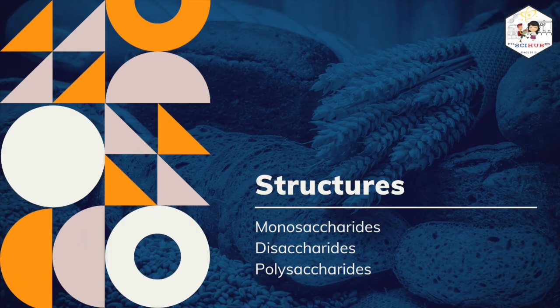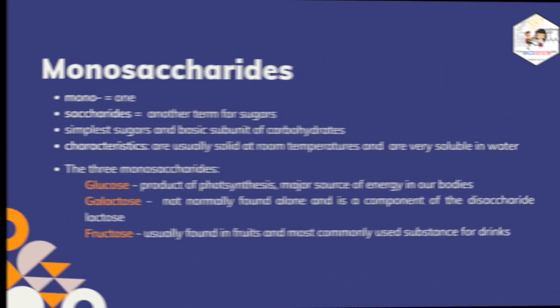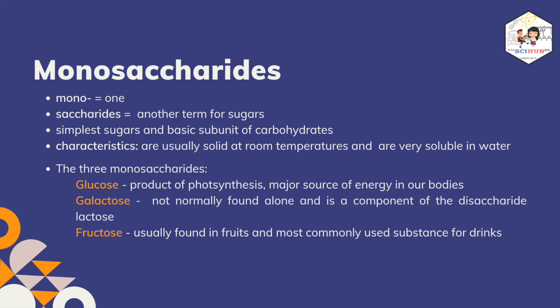Carbohydrates can be classified through their structures, namely monosaccharides, disaccharides, and polysaccharides. Throughout this module, we will be discussing the different carbohydrates and how each functions depending on their structure. Let us start off with monosaccharides.